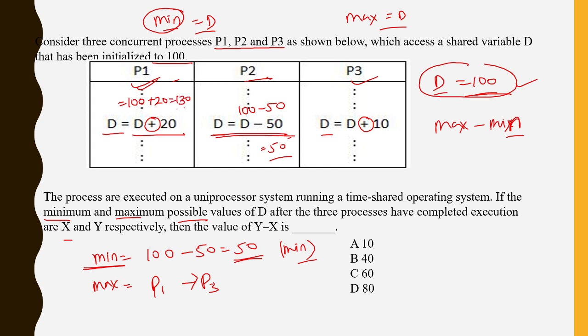So P1 will do 100 plus 20, that's why 120. It is 120, not 130. So now the value is 120.